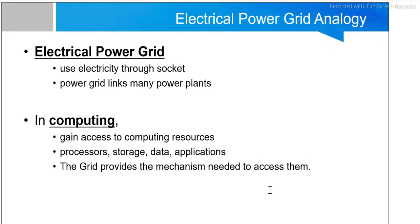Next is the electrical power grid analogy. We have electricity connections in our homes, offices, and organizations. From a particular junction, we access electricity, collect the excess electricity, and it is transmitted to another circuit. Using electricity through a socket is an example of an electrical power grid. Many power grids link together to supply electricity to many power plants as well.